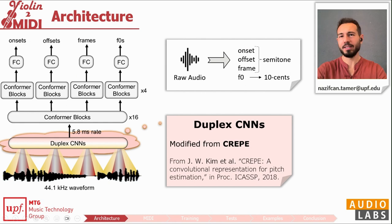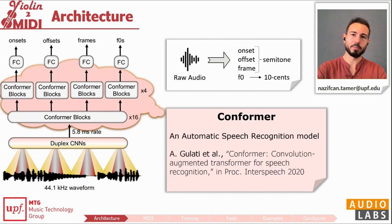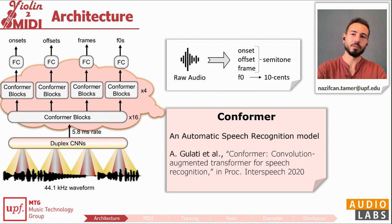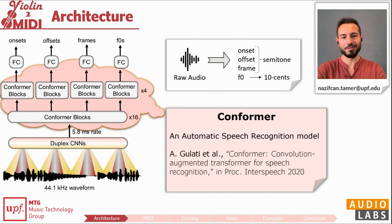First, we have duplex CNNs followed by multiple conformer blocks. Conformer is a state-of-the-art speech recognition model — essentially cascaded convolution and transformer layers — and thus suitable for general audio processing such as transcription.